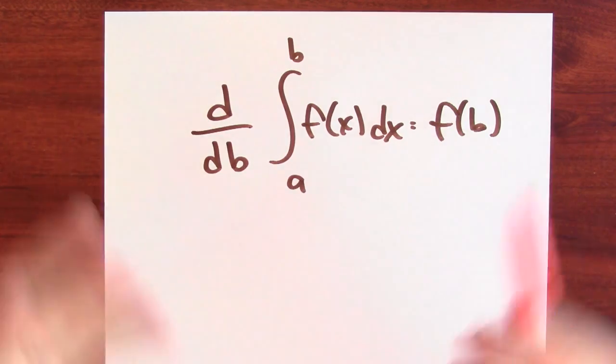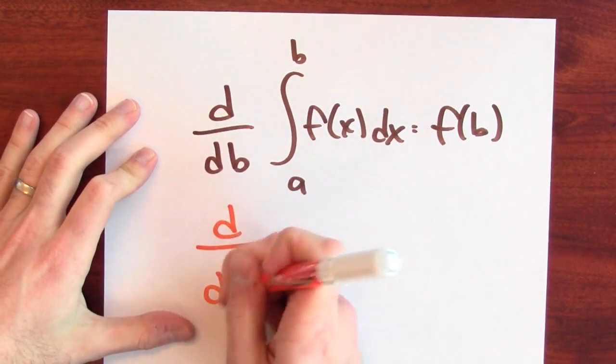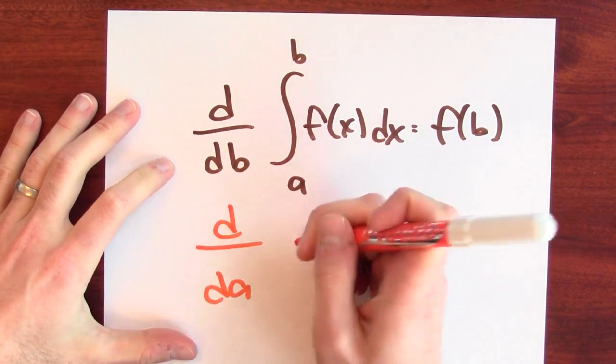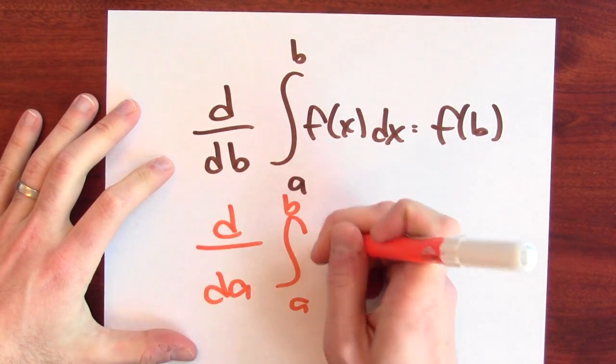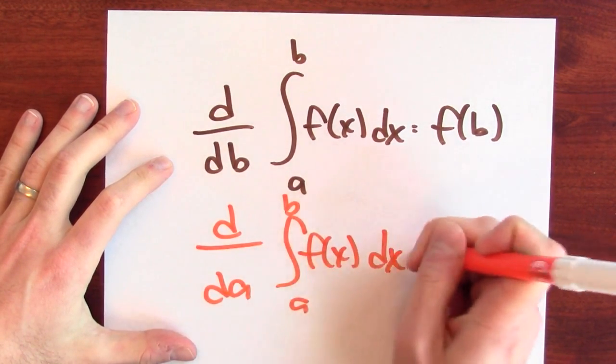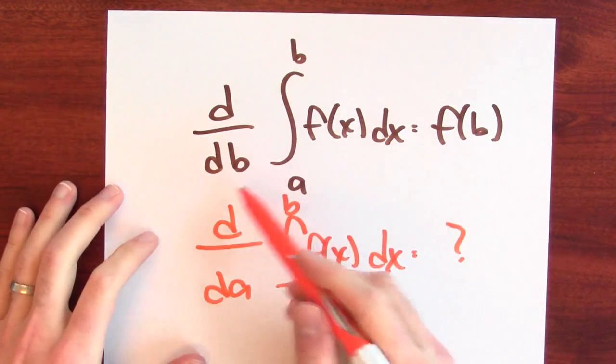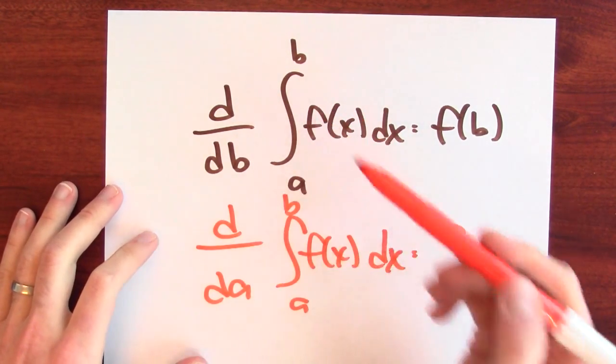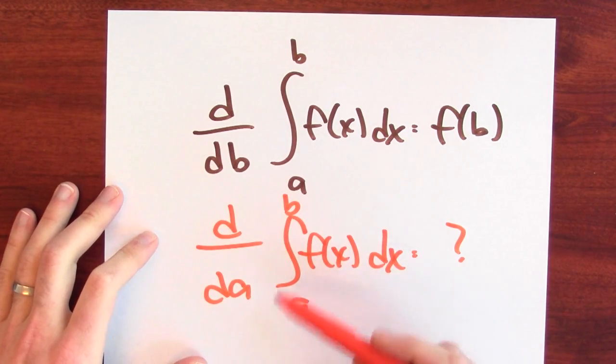differentiate with respect to the left-hand endpoint instead of with respect to the right-hand endpoint? By which I mean, what's the derivative with respect to a of the integral from a to b of f of x dx? What happens if instead of differentiating with respect to the top endpoint, I'm differentiating with respect to the bottom endpoint?